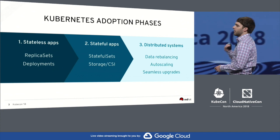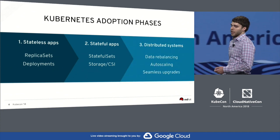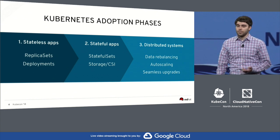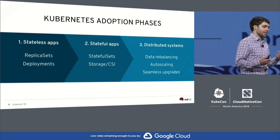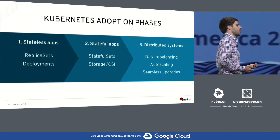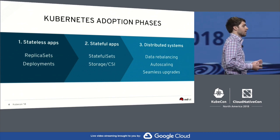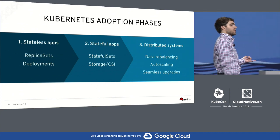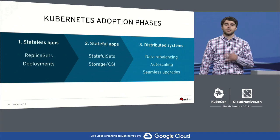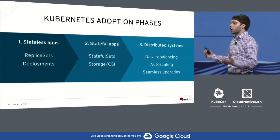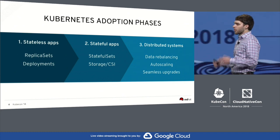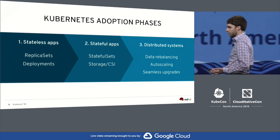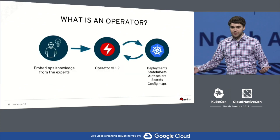As a community, we've progressed past that. We're now running really complex distributed systems on Kubernetes, and that's a challenge because there aren't the primitives at the application layer. You need things like data rebalancing, seamless upgrades, and smarter auto scaling. This is where we are today, and I want to talk about how you can fulfill this on Kubernetes — and the answer is an operator.